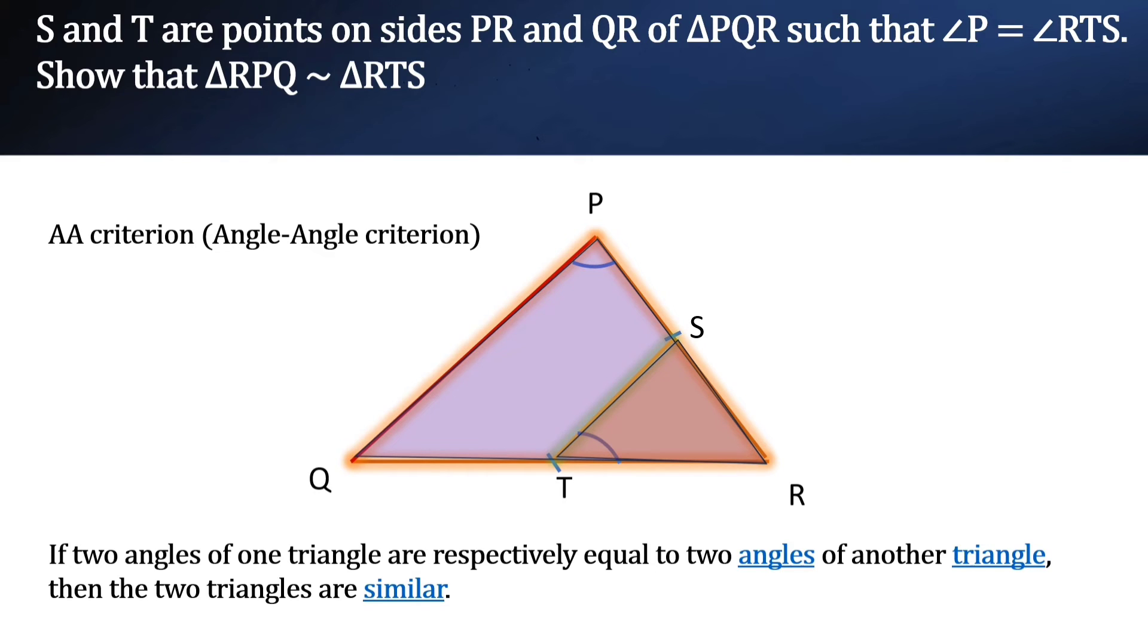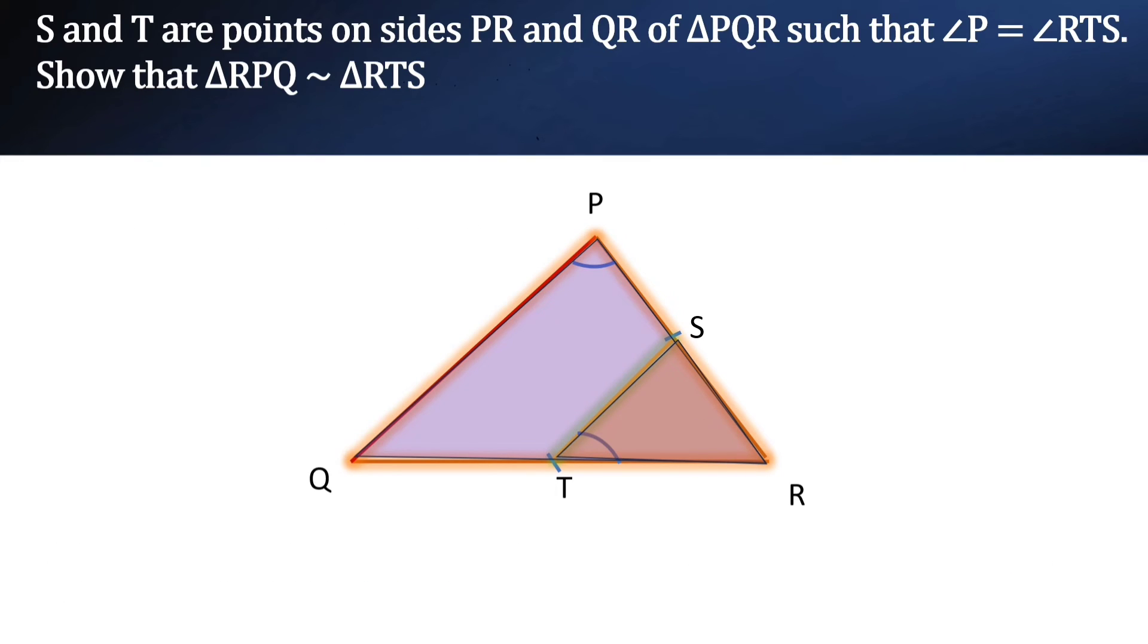Here angle P and angle T are equal, and angle R is common to both. So now let us prove in triangle RPQ and triangle RTS we have angle RPQ is equal to angle RTS. Why? It is given.